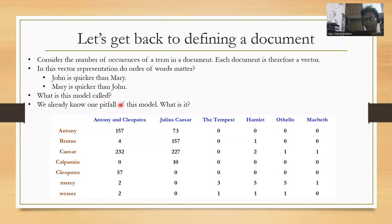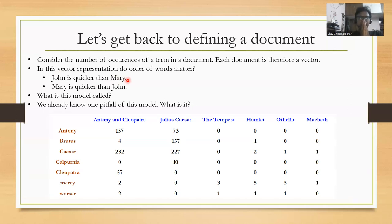We already know one pitfall: we swapped nouns and found that the meaning of the entire sentence changed, but the vector couldn't capture it. So let's be mindful of that. But still, it's one step forward and we will see how this whole thing works.